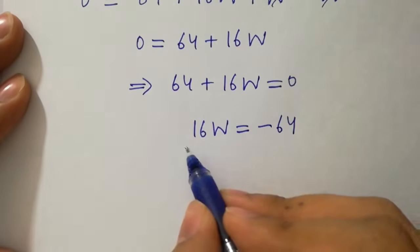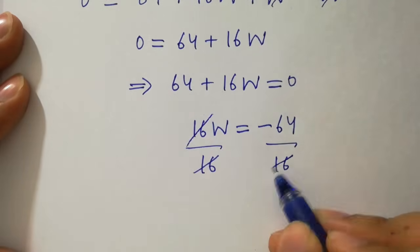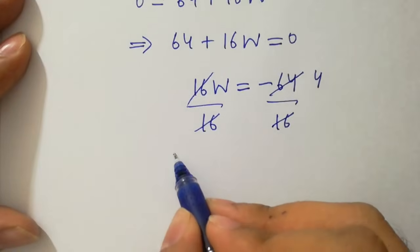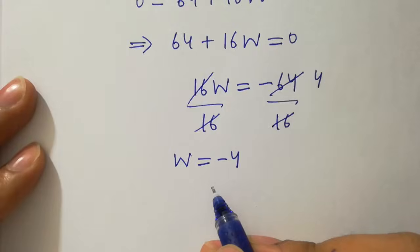Here we have 16 times 4 is 64, so we get w equals to minus 4, value of w.